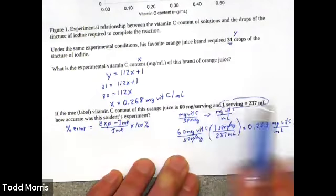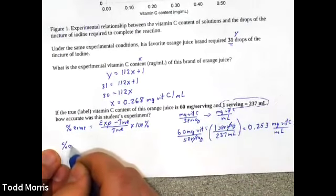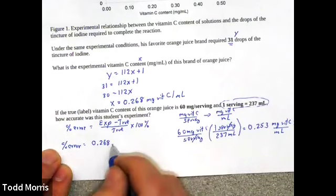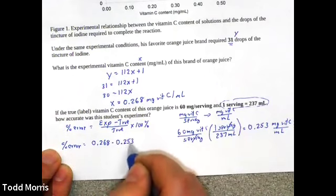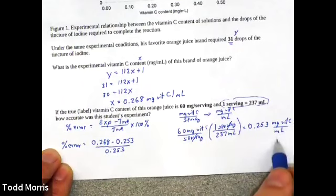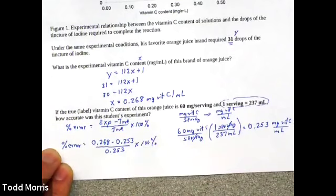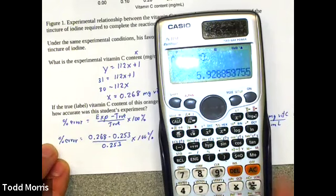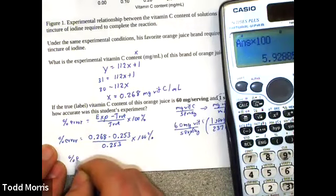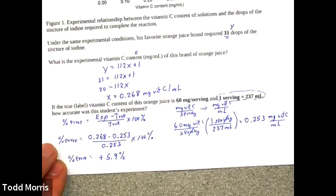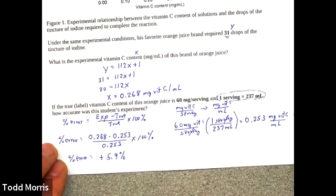Plugging into the percent error formula: (experimental − true) ÷ true × 100% = (0.268 − 0.253) ÷ 0.253 × 100%, giving a percent error of approximately positive 5.9%. So compared to the labeled value, this student's experimental results were almost 6% higher than they should have been.